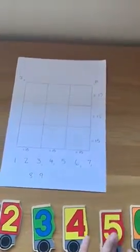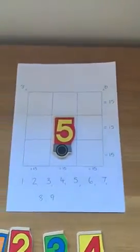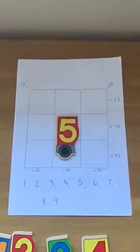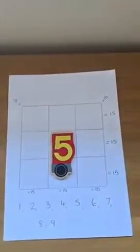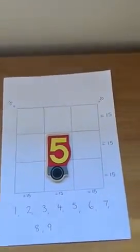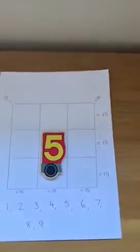So the first part of my answer is that five is going to be in the middle. Once five is in the middle, we can then start to look at number bonds because 15 take away five is going to give us 10. So all of the rows and the columns, the missing numbers are going to add up to 10.